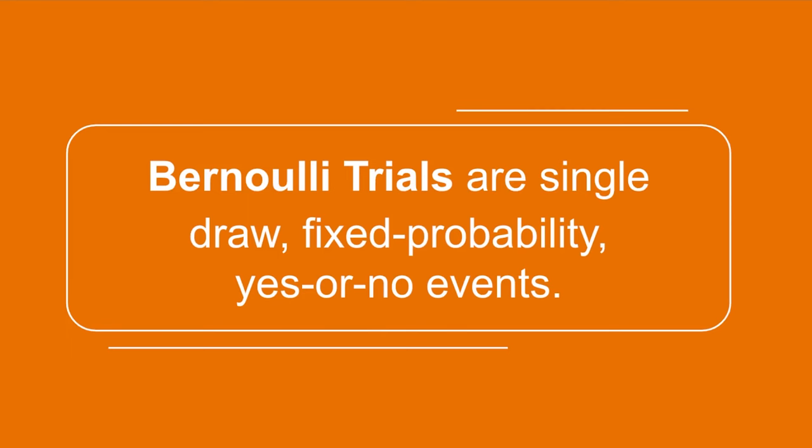Bernoulli trials are single draw, fixed probability, yes or no events. The dice game before is a Bernoulli trial because it takes one roll to complete and there are only two possible results: success, which in our case is rolling a five or six, or failure, which is rolling less than a five. Moreover, every time we play the game, the probability of winning is the same.